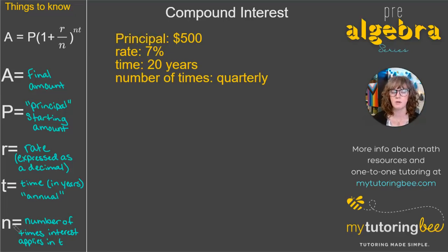All right, let's take a look at a pretty simple problem here. We've got our principal of $500, our rate of 7%, the time is 20 years, and the number of times that it's going to compound is quarterly. So quarterly meaning four times in a year. Let's go ahead and sub those numbers in. So A equals, our principal is 500.